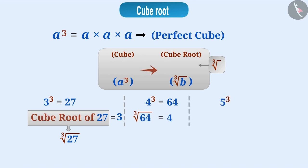So if 5 cube is equal to 125, then for 125 what will be the cube root? Think, think! Absolutely right! The cube root of 125 will be 5.